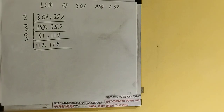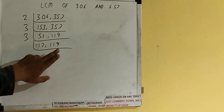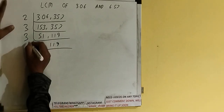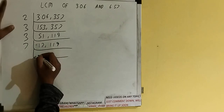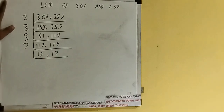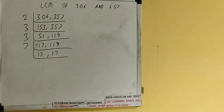We check with the next lowest prime number, 5 — neither number is divisible by 5. So we check with 7. The first number, 17, is not divisible by 7, but the second number, 119, is divisible by 7 (7 × 17 = 119). So we divide 119 by 7 to get 17, and copy the first number down.